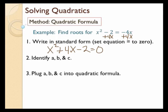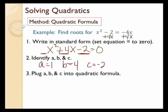Let's find a, b, and c. So a is the coefficient of the squared term — that's 1. B is the coefficient of the x term, which is positive 4. And c is the constant. You've got to remember that the signs go with these. The first two signs were positive, but this one is negative, so c is going to be negative 2.